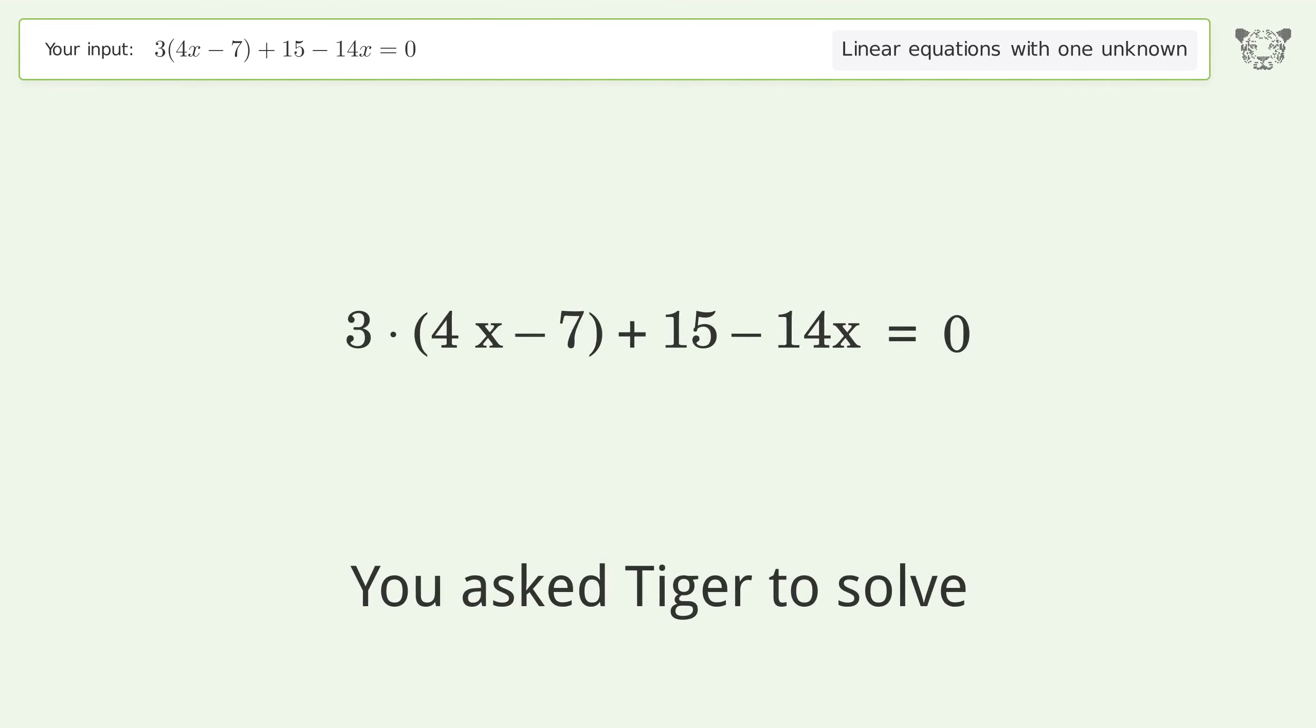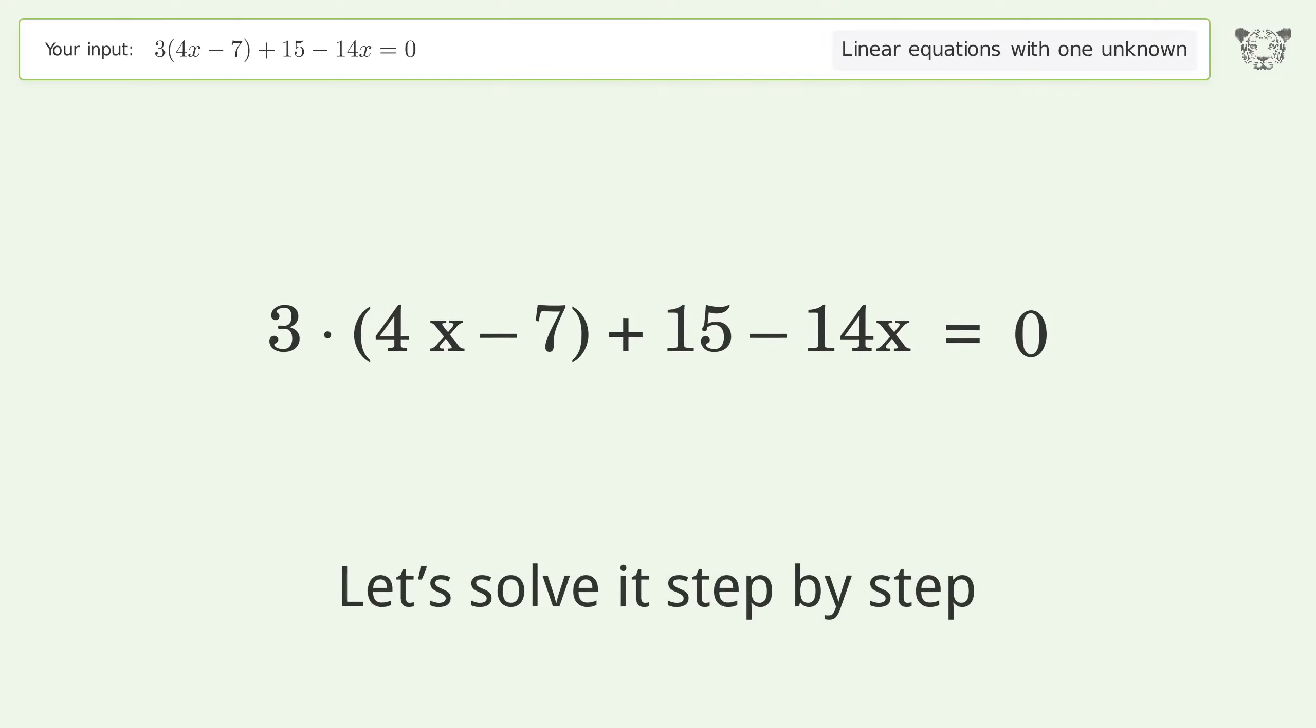You asked Tiger to solve this linear equation with one unknown. The final result is x equals negative 3. Let's solve it step by step and simplify the expression.